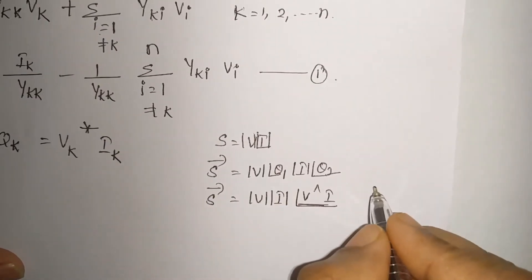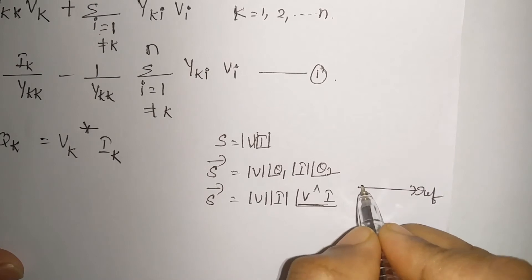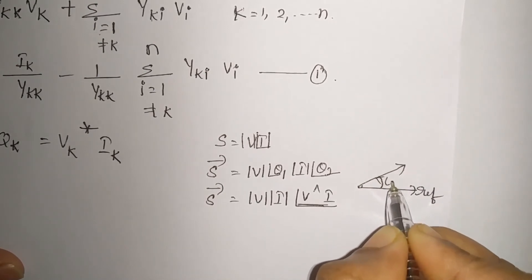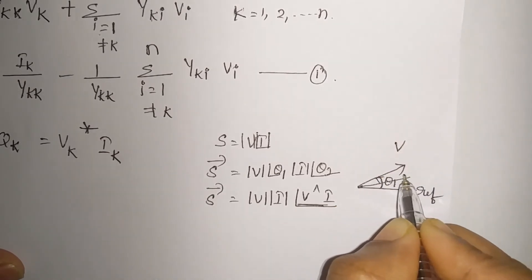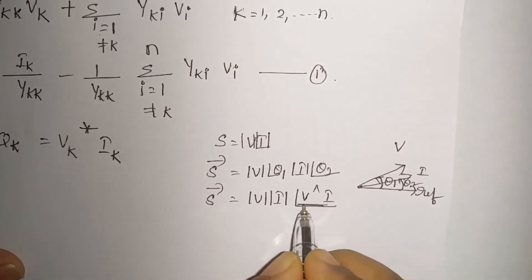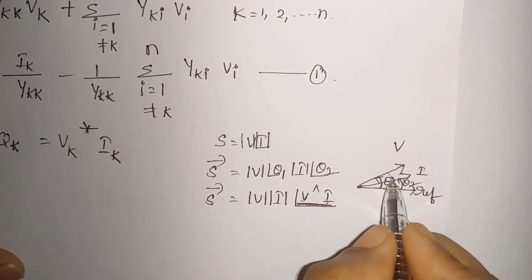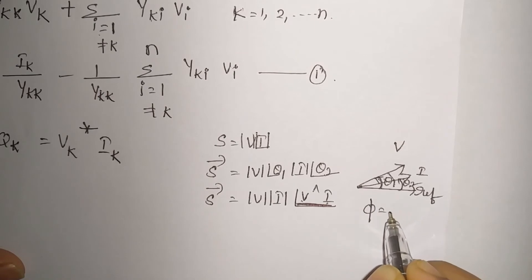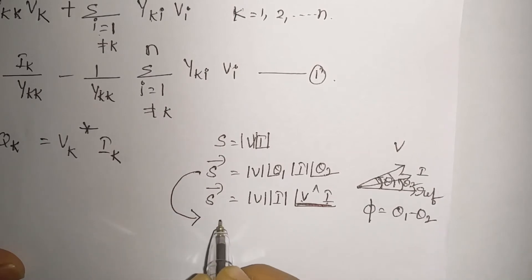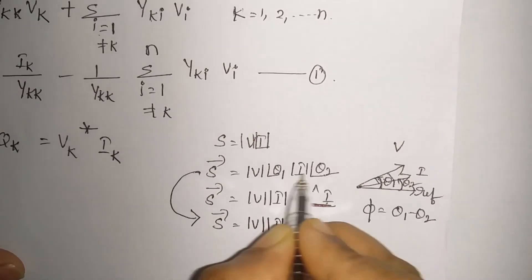Let us have the phasor diagram. This is our reference. If V is making some theta 1, let us assume that I current is lagging. So this is the current I. What is the angle here? Theta 2. Now what is the phase angle phi? This is the angle between V and I vector. What is the phase angle difference between these two? Obviously theta 1 minus theta 2. Let the phase angle difference be phi, this is theta 1 minus theta 2.